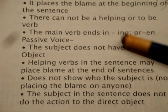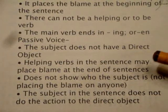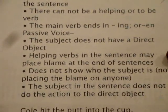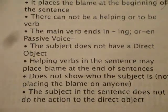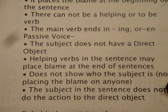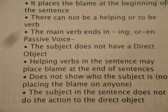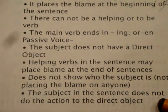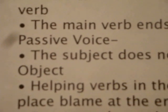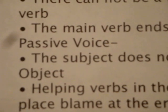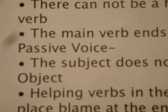Passive voice: the subject does not have a direct object. Helping verbs in the sentence may place blame at the end of the sentence. It does not show who the subject is, not placing the blame on anyone. The subject in the sentence does not do the action to the direct object. A good indication that a sentence is in passive voice is to look for a helping verb such as 'was'.